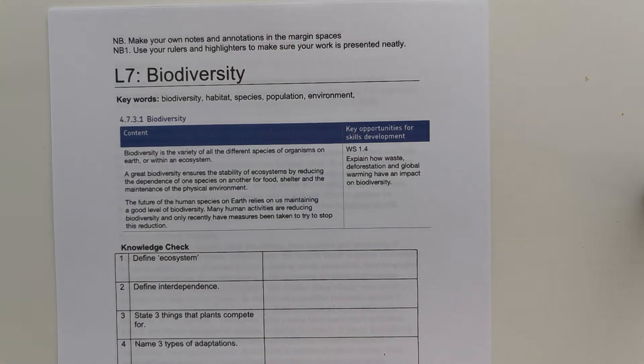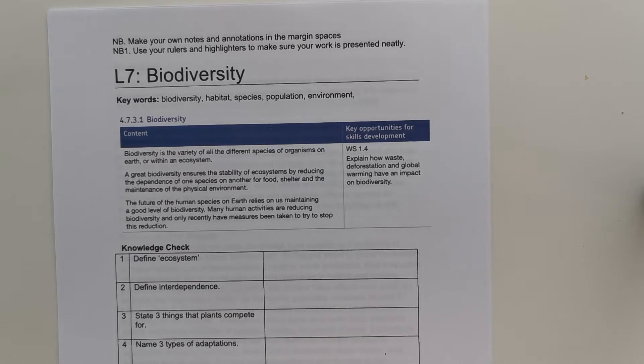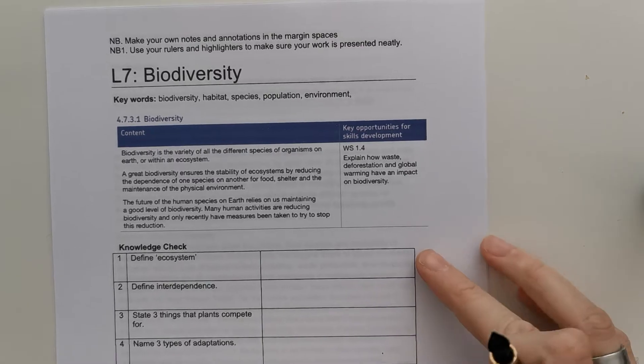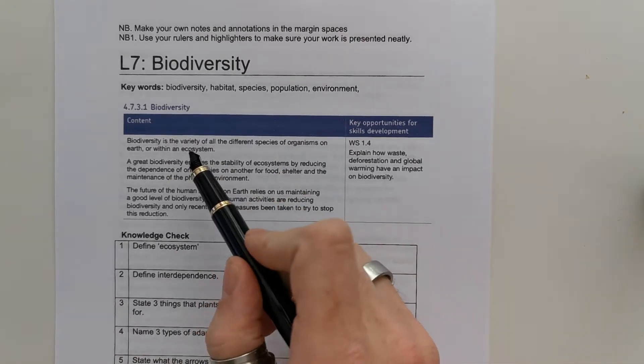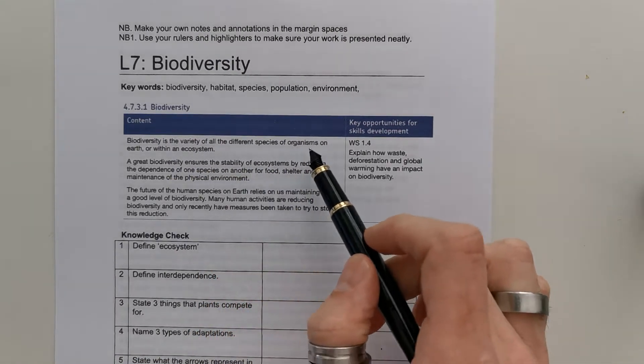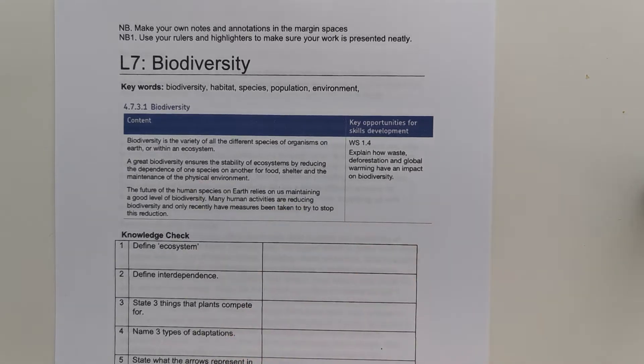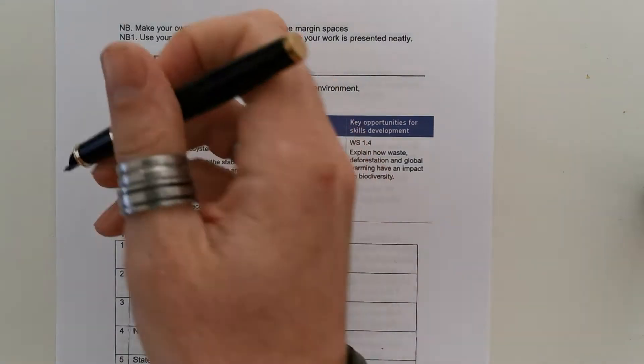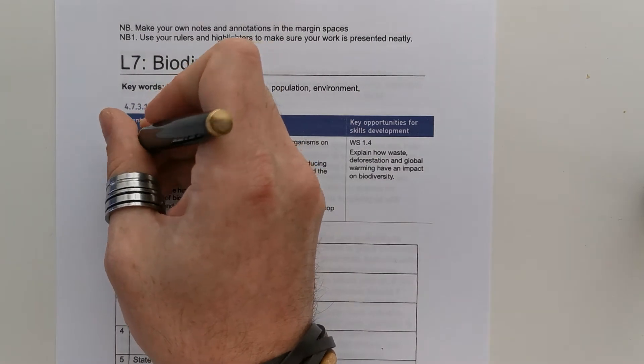Welcome to Lesson 7 of the Ecology Unit of Work for your GCSE Combined Science. Lesson 7 is all about Biodiversity. Biodiversity is the variety of all the different species of organisms on Earth or within the ecosystem. That is the keyword definition that we are going to be exploring in depth today.